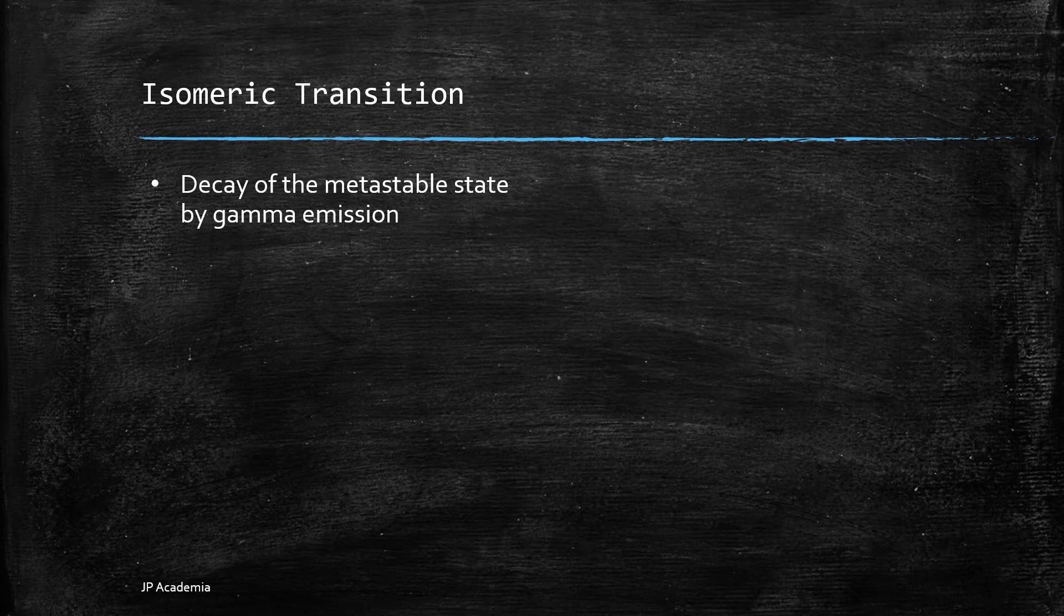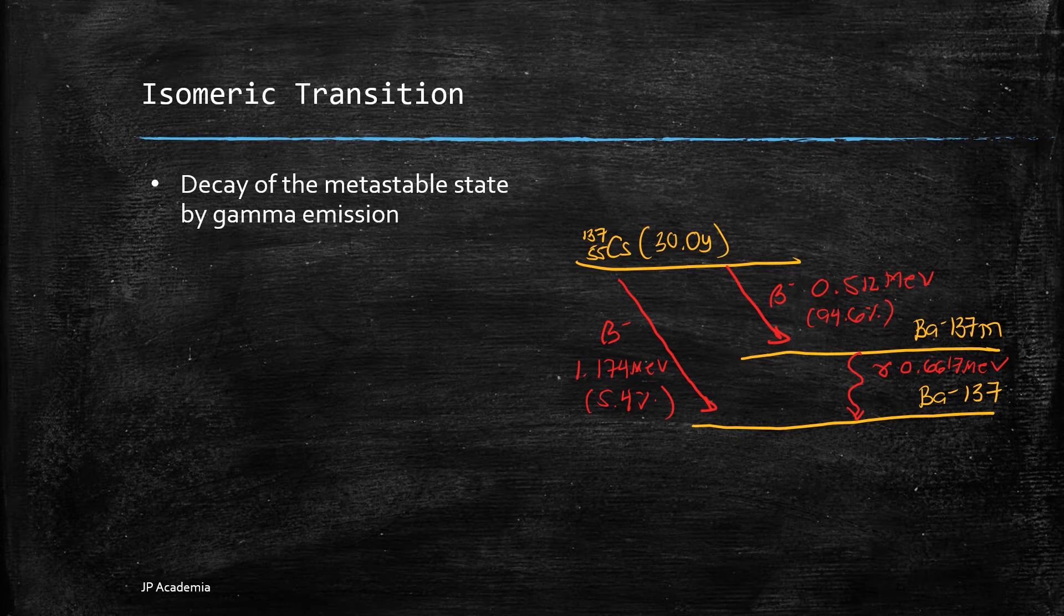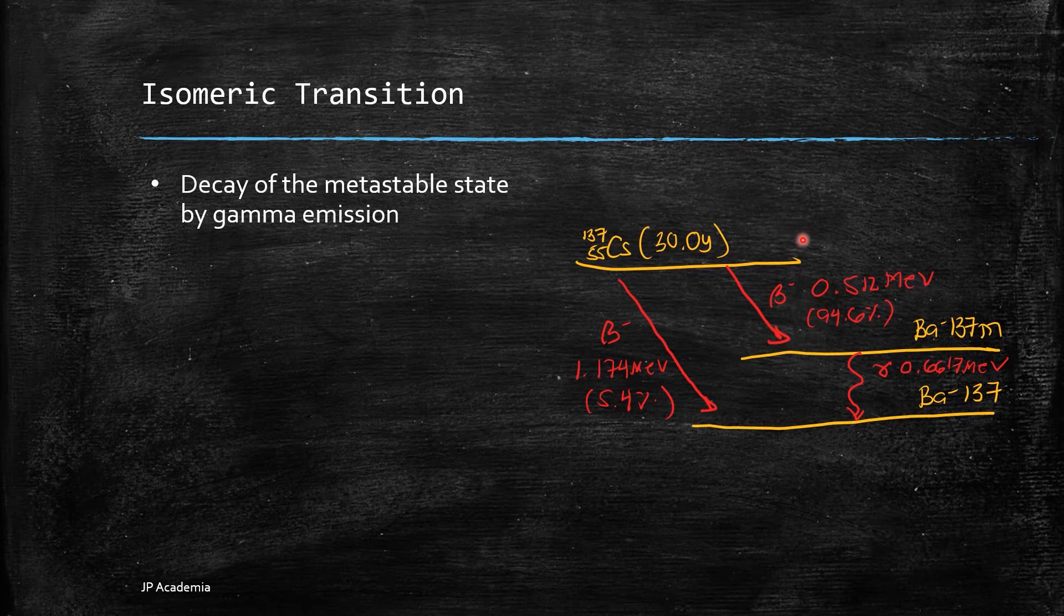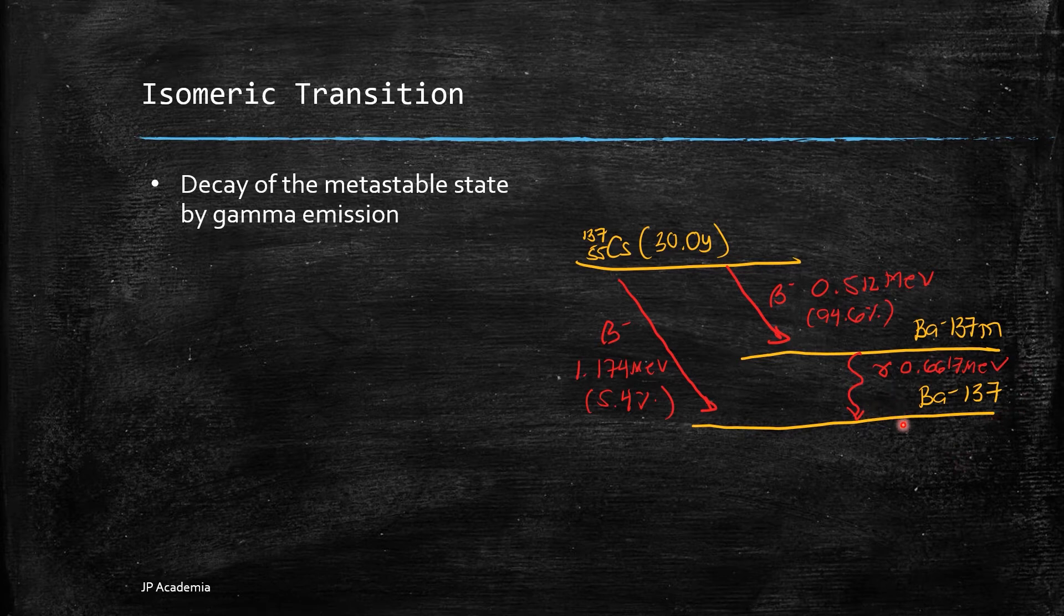Next we have isomeric transition. When a daughter nucleus is formed in a long-lived metastable or isomeric state, the decay is through gamma ray emission. It is similar to an excited state wherein it emits gamma rays, except that the average lifetime of metastable is longer. An example of this is the decay of radionuclide cesium-137 with the half-life of 30 years, which decays into a metastable barium-137m most of the time, 94.6%. Then from this metastable state, this will decay going to a stable barium-137. We also have this alternative decay path.